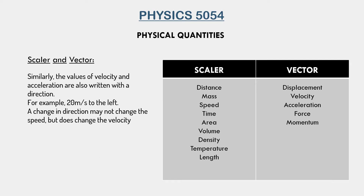Speed is a scalar quantity and velocity is a vector. Velocity is a vector because it is always given with a direction. So if I say a cyclist is traveling at 12 meters per second, I am giving its speed, not its velocity, because I have not specified which direction it is going. But if I say the cyclist is traveling at 13 meters per second towards the left, or east, or at a bearing of 060 — all of these give a direction — then you would be giving the velocity.